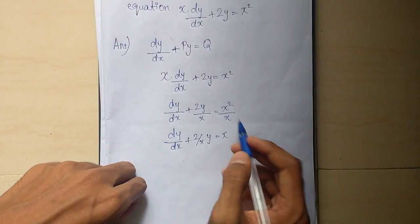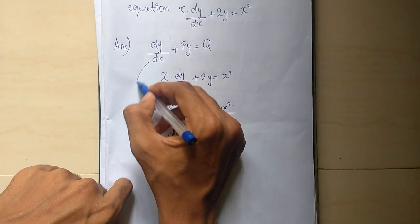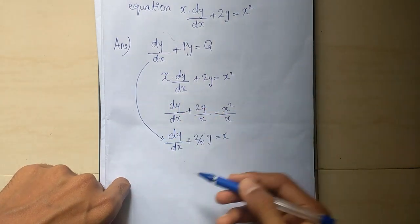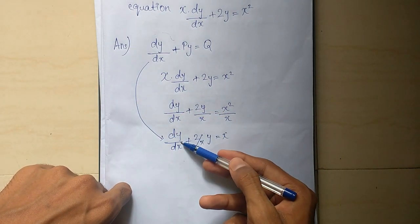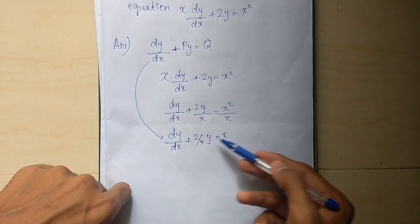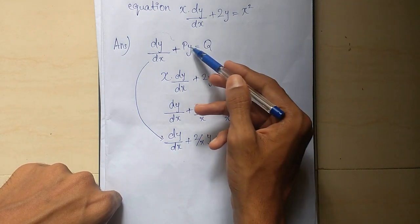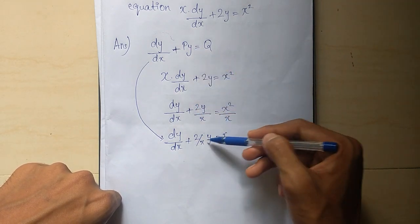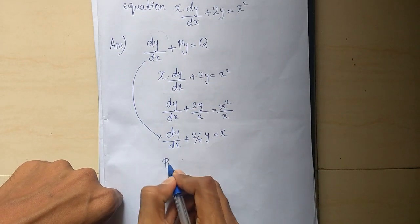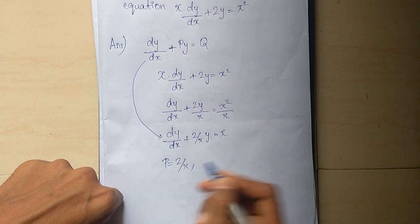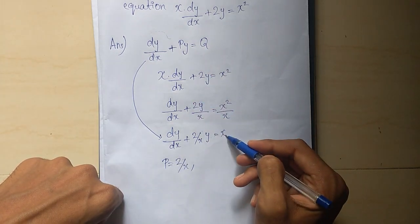Our standard form is dy by dx plus Py equals Q. We write the equation in that formula. So p is 2 by x, and q is x.